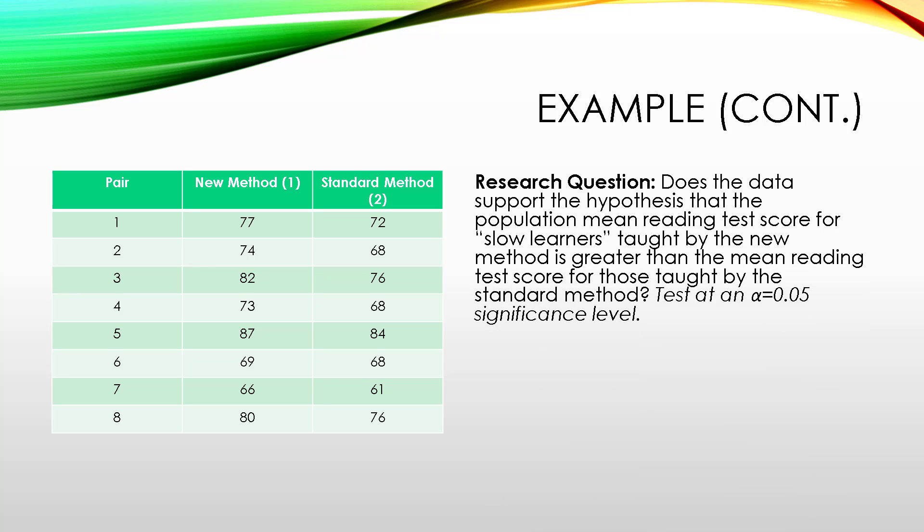The research question is going to be, Does the data support the hypothesis that the population mean reading test score for slow learners taught by the new method is greater than the mean reading test score for those taught by the standard method? And we're going to want to test this at an alpha value of 5% or 5% significance level.